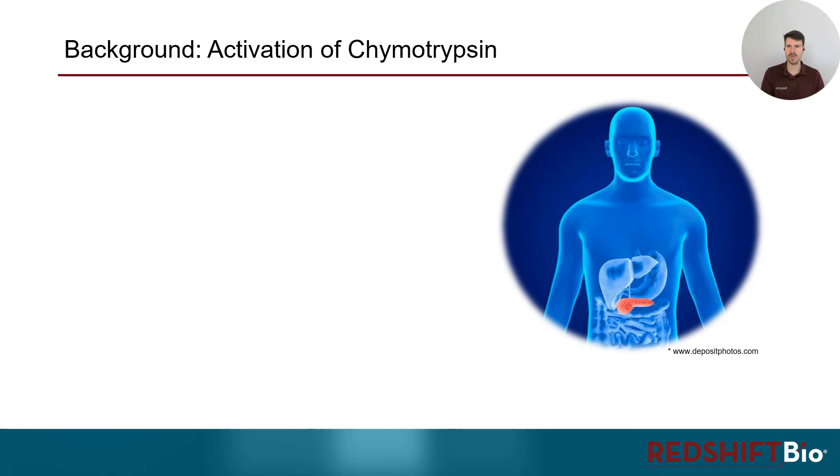But first of all, let me give you a brief introduction on the activation pathway of chymotrypsin. The inactive precursor molecule chymotrypsinogen consisting of 245 residues is produced in the pancreas.